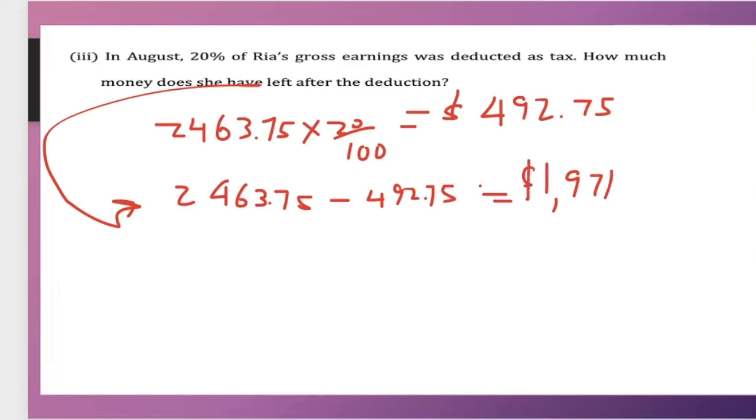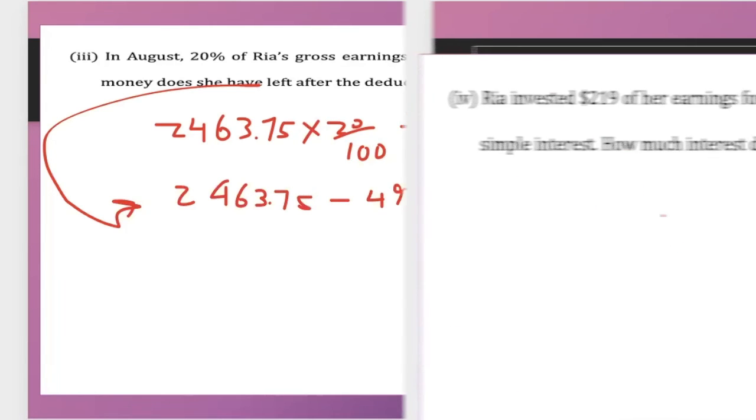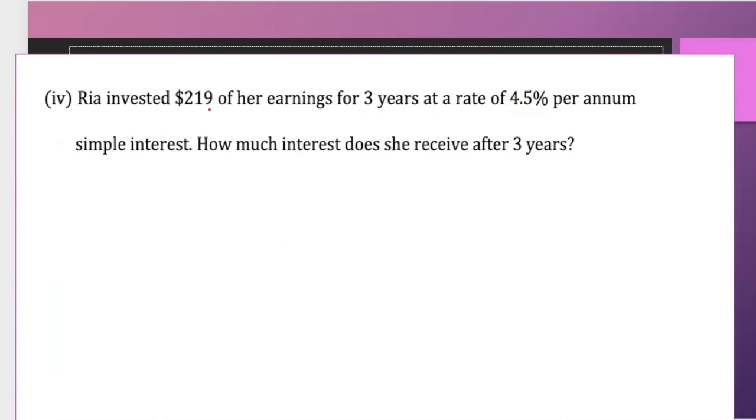Ria invested $219 of her earnings for three years at the rate of 4.5% per annum simple interest. How much interest did she receive in three years?